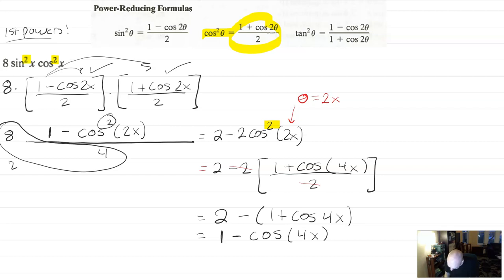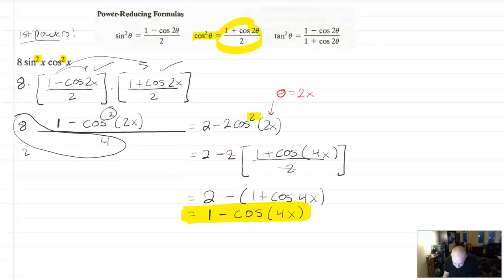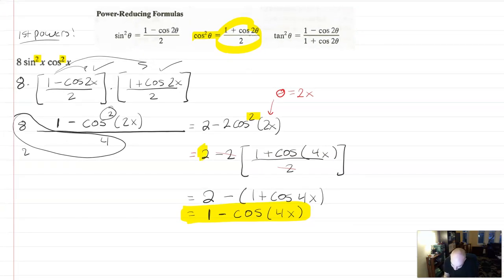which is going to be 1 minus cosine of 4x as a simplified final answer. So it is pretty cool how sometimes these simplify down really nicely but other times they don't and you have to do a lot of algebra to do it and honestly the biggest problem is people screw up their fractions. There's a lot of fractions in here and a lot of distributing and a lot of factoring so if you're going to use the power reducers and you have no other choice go ahead but please use them correctly that's my main ask for you guys